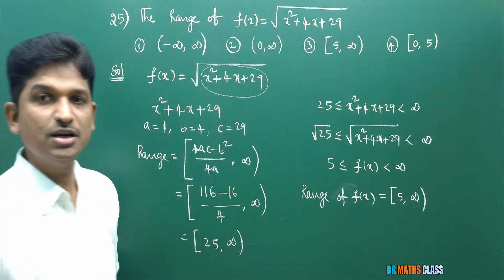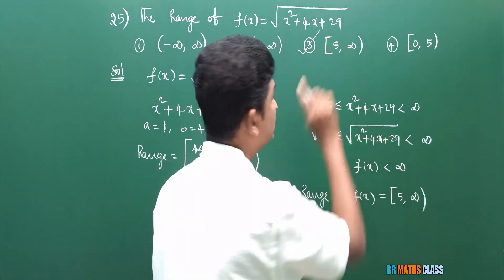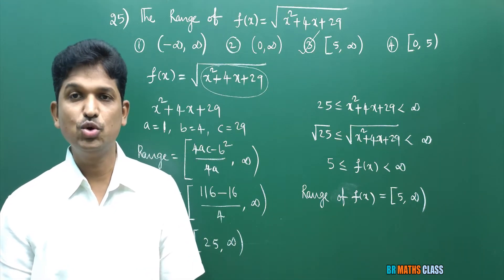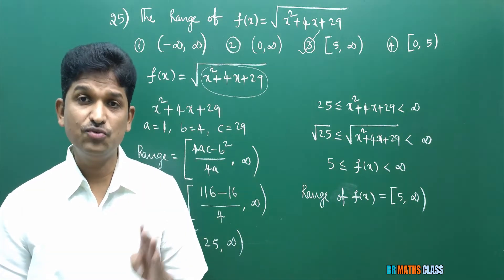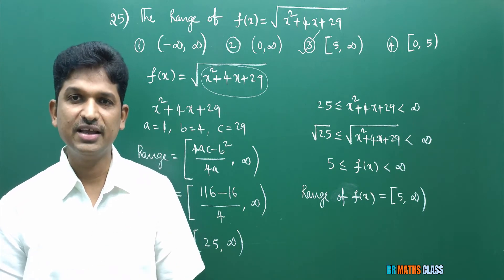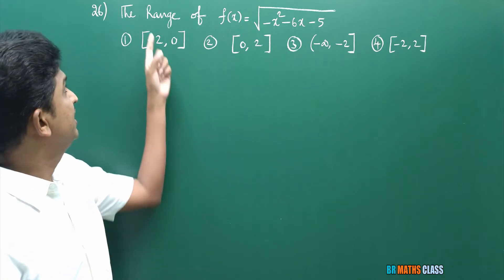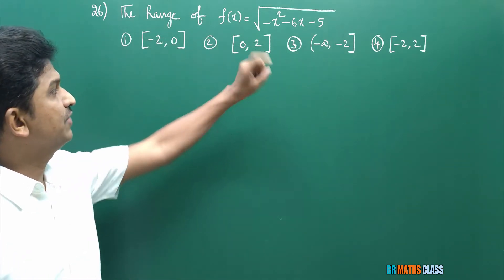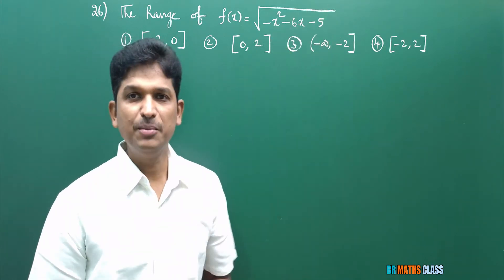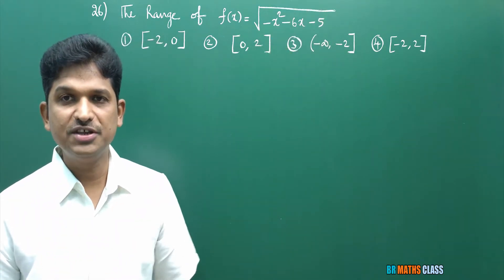In these options, the third option — closed interval [5, infinity) — is the right option. I hope you understand this. Now we will move to the next problem. Observe question number 26: we need to calculate the range of the function f of x equal to square root of minus x square minus 6x minus 5. Let's see how to find the range of this function.